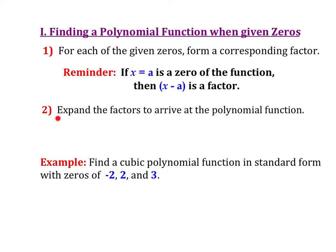Step two says to expand — essentially we're going to distribute things out. When we are distributing, remember that we can only multiply two pieces at a time. So there will be a scenario where we've got three different factors or maybe four that we're trying to distribute. In those cases, you're going to first pick two factors, distribute those out, and then bring the third one into play from there. So I'll show you what I mean here.